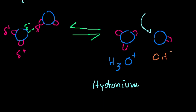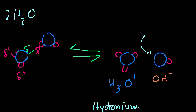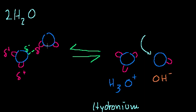And this process where water can kind of spontaneously do this — and it's happening to a very small number of molecules — if you view this as an equilibrium reaction, the reaction is much more weighted in the leftward direction. But this can happen. This process is called autoionization. Because you just have water by itself, and by some random circumstances of molecules bumping into each other just right, some subset of the water will ionize — one part loses a proton and the other part gains one.